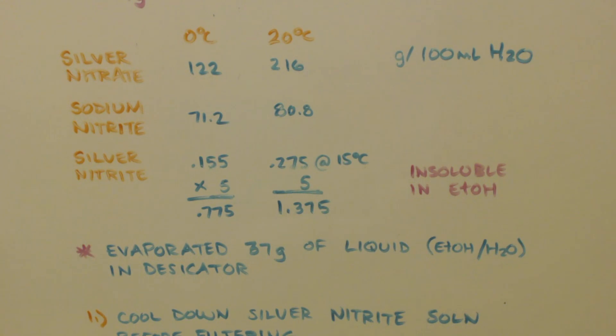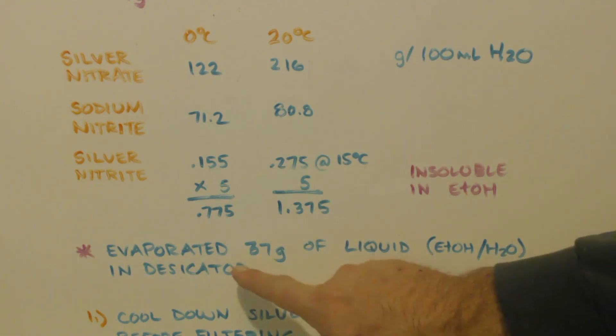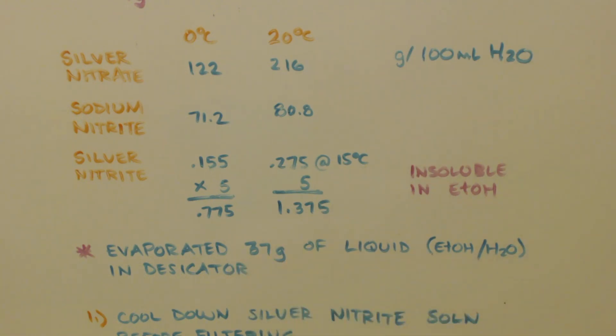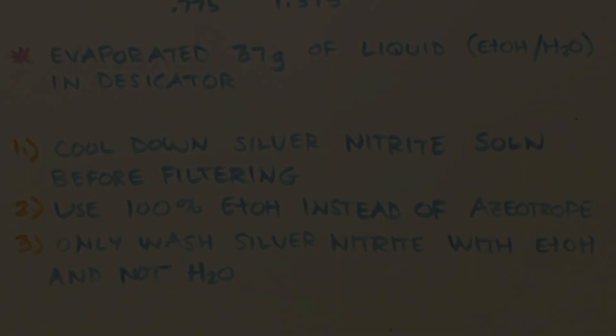But anyways, keep in mind that when I put it into the desiccator, I evaporated off 37 grams of liquid ethanol and water, probably mostly ethanol. Well, I used an azeotrope, so there was some water in there. But 37 grams of liquid got evaporated off of there. That's a lot, man.